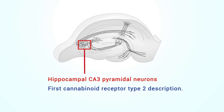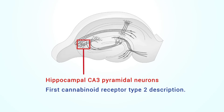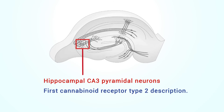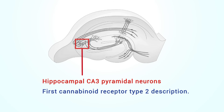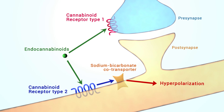By providing a first description of functional neuronally expressed cannabinoid receptor type 2 in area CA3 of the hippocampus, our findings reveal a novel role for cannabinoid receptor type 2 in the central nervous system. They challenge the classic cannabinoid receptor type 1-focused view on endocannabinoid function.